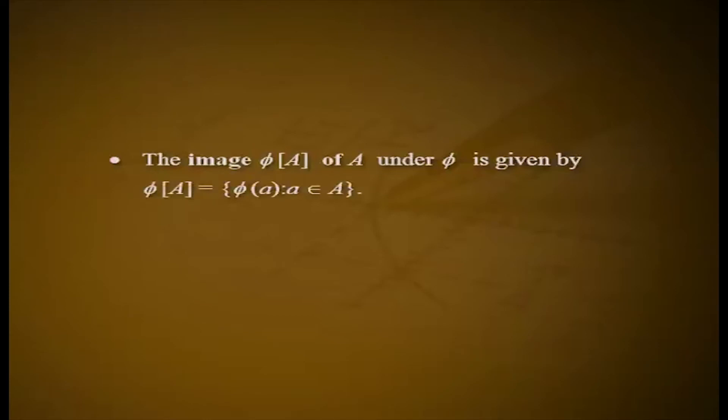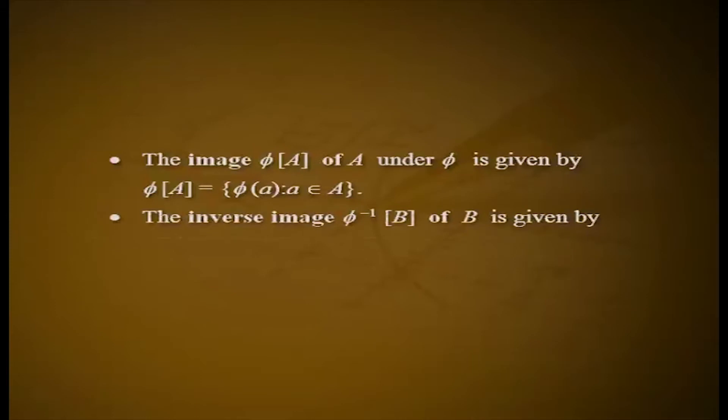Definition: Let phi be a function from a set X into a set Y, let A be a subset of X and B a subset of Y. The image phi of A under phi is given by phi(A) equals the set of phi(a) such that a belongs to A. The inverse image phi inverse of B is given by phi inverse(B) equals the set of x in X such that phi(x) belongs to B. Note that phi(A) is a subset of Y and phi inverse(B) is a subset of X.